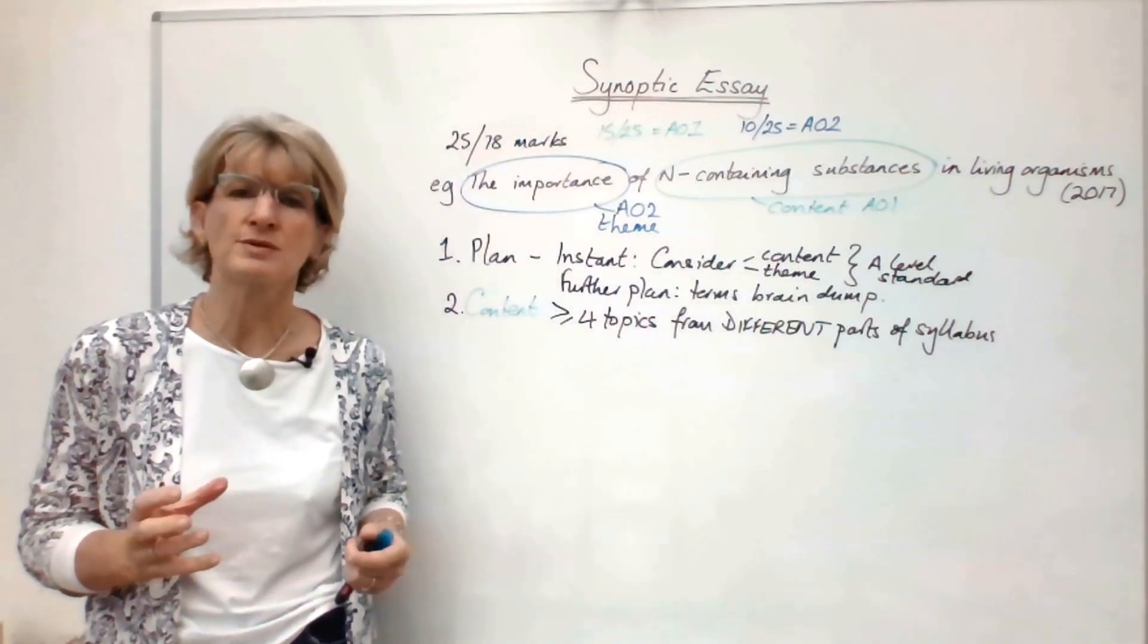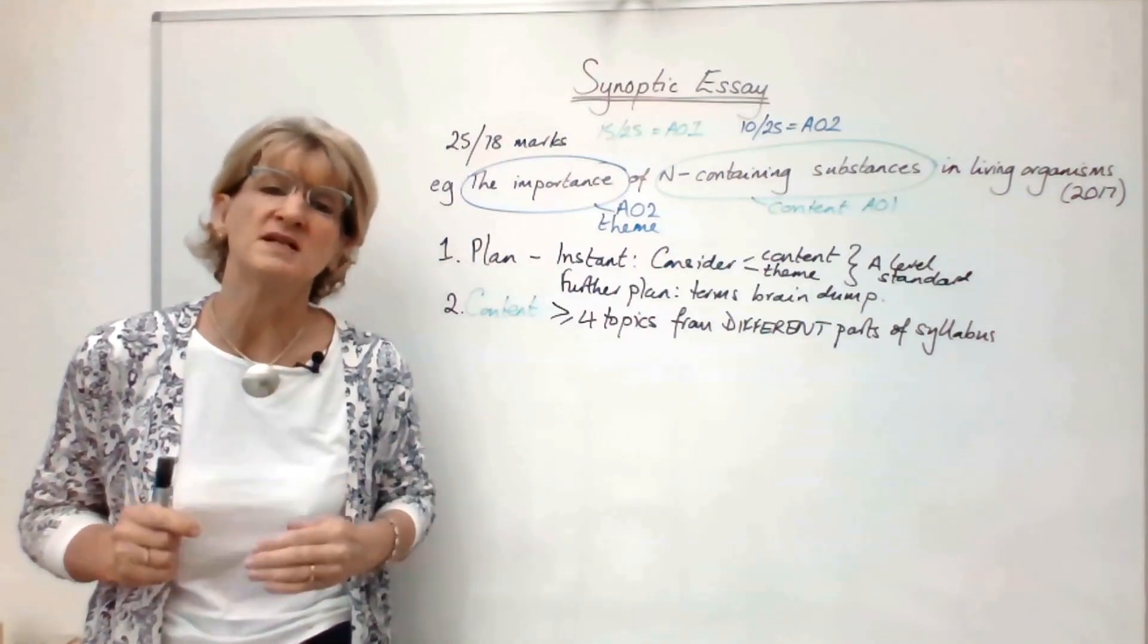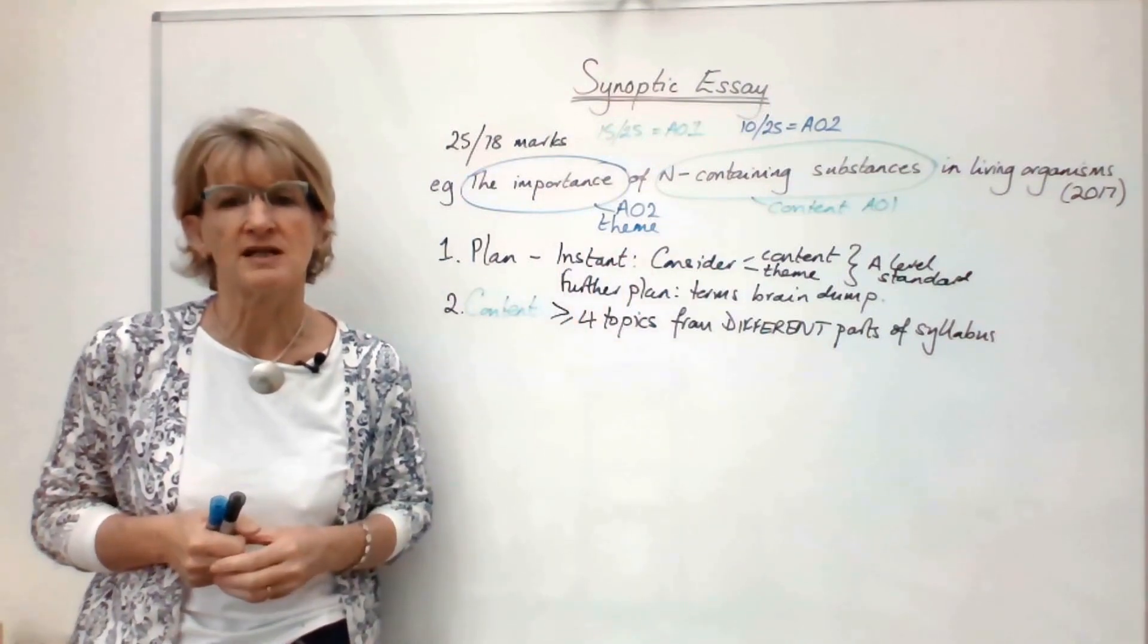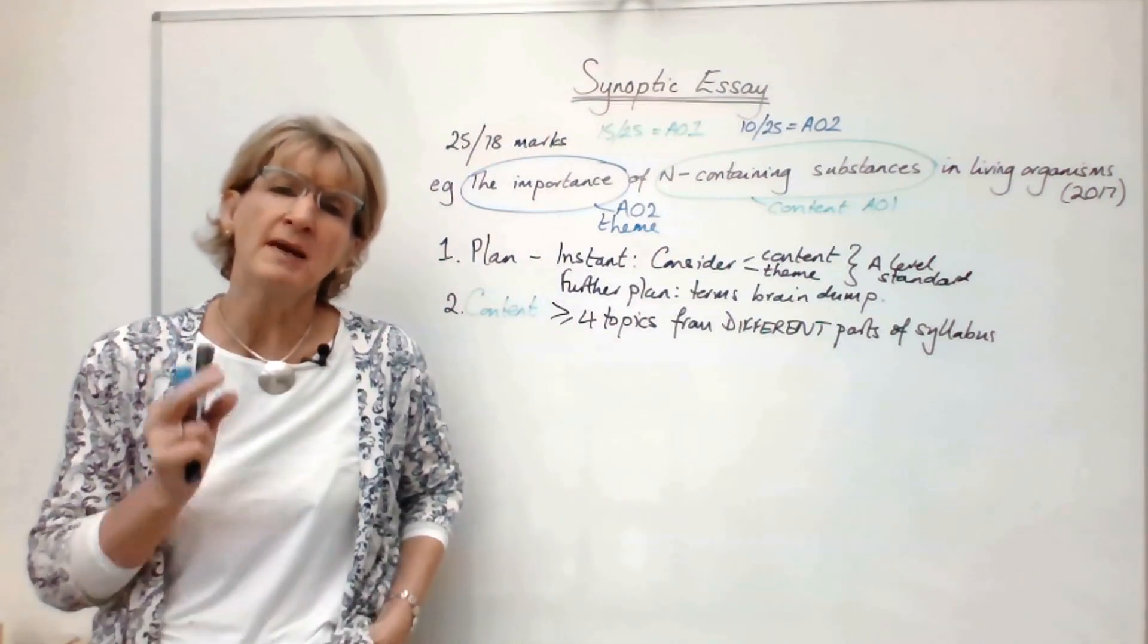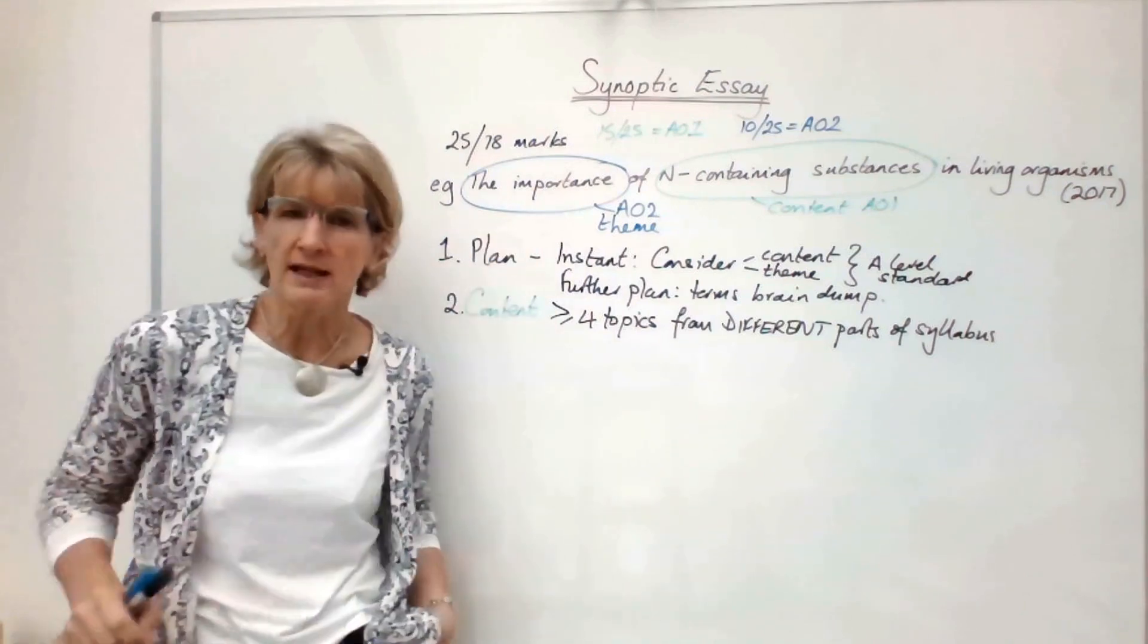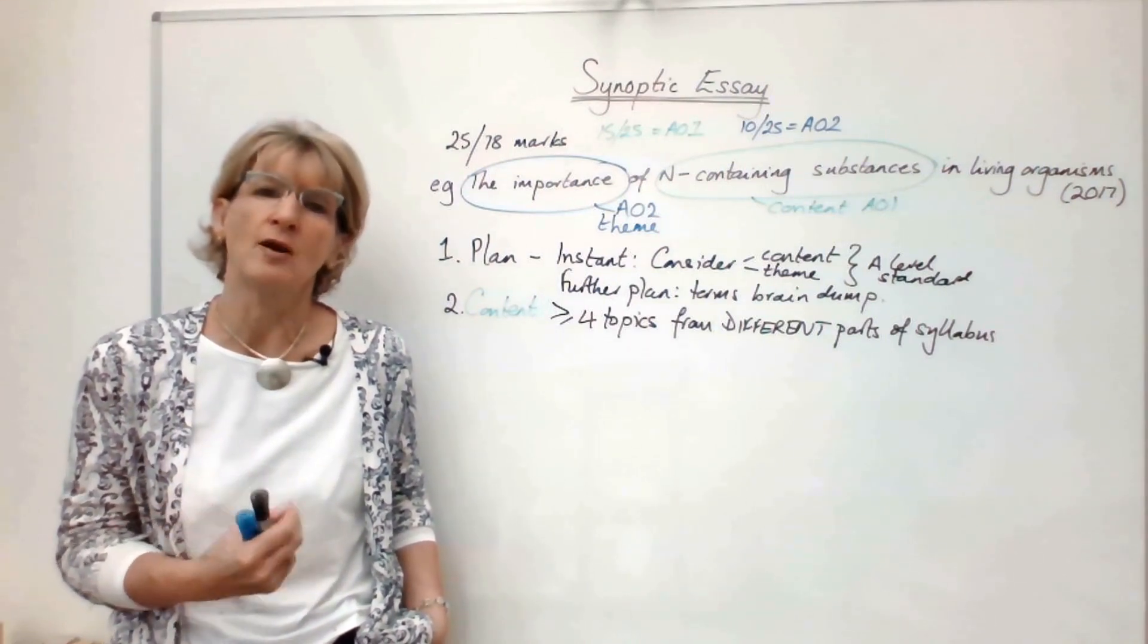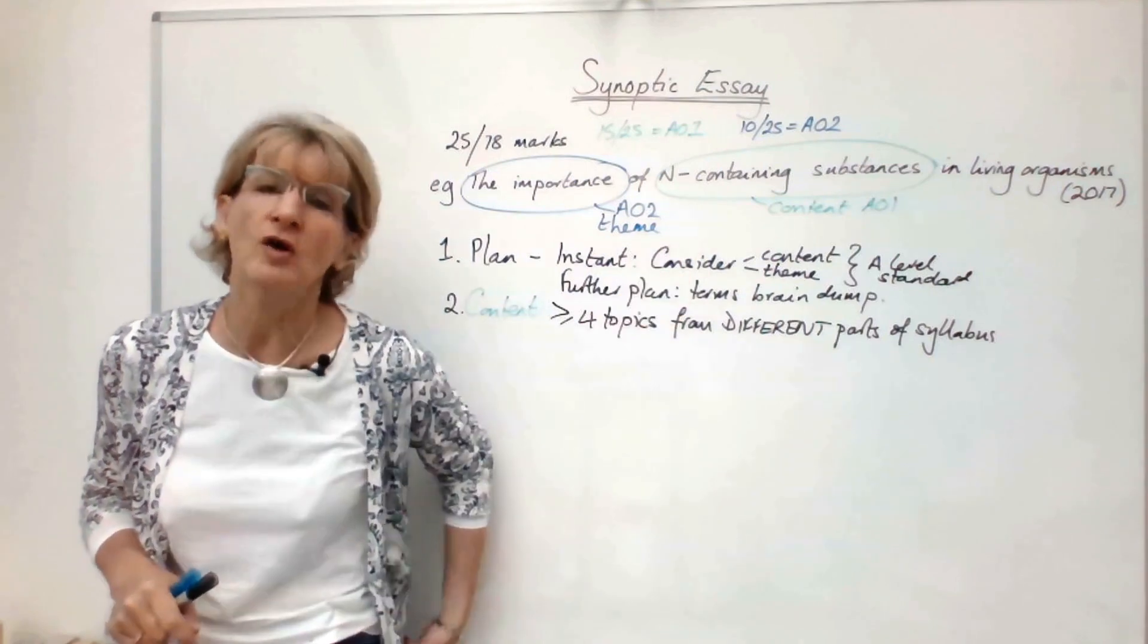The really key thing here is that these four topics need to come from different parts of the syllabus. Don't just talk about lots of different examples from one topic. This is called a synoptic essay for a reason, so you're showing the breadth of knowledge that you've learnt across your two years of A-level study. If your timing goes awry and you only manage to talk about one or two topics, however well applied to the theme, you're going to get a maximum of 10 marks.